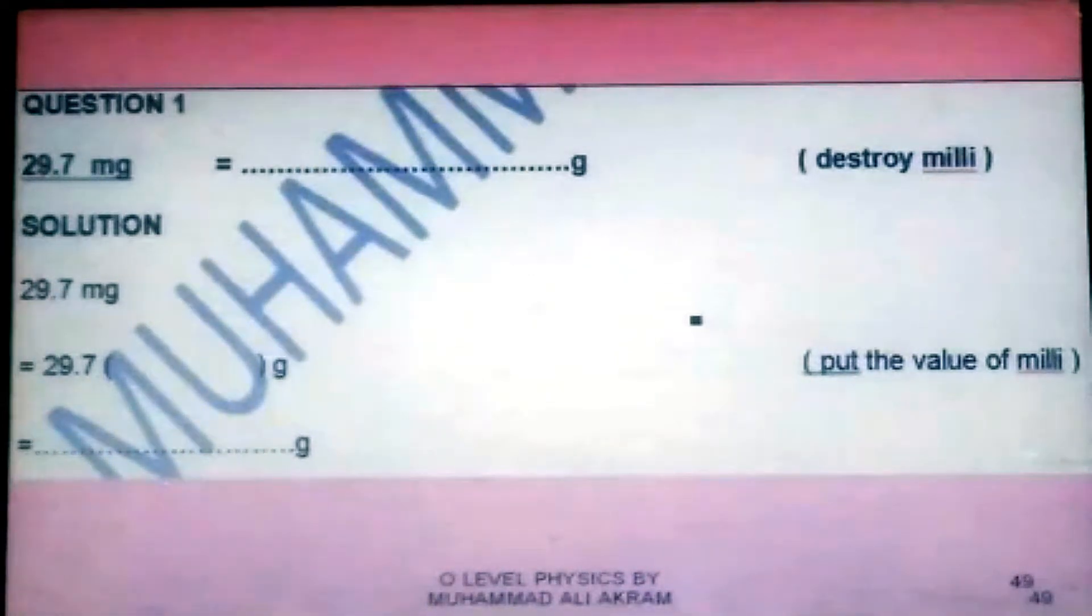Classwork number 2, first question is: 29.7 milligrams are equal to how many grams? Now, look at the instruction. I am telling you in the brackets exactly in front of the question, destroy milli. These are my instructions. If you want to do this conversion, you have to destroy milli. Solution: 29.7 milligrams. You have to start with this. In the second step, 29.7 will be copied as it is. Instead of writing milli, I have substituted here an empty bracket, and gram is copied as it is. In front of this step, my instruction is there: put the value of milli.